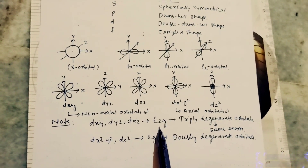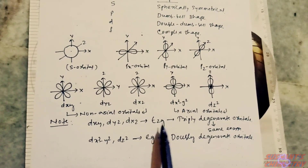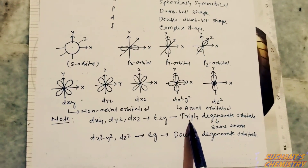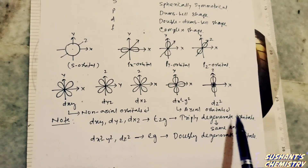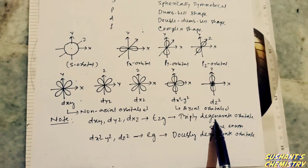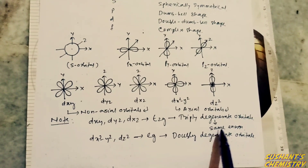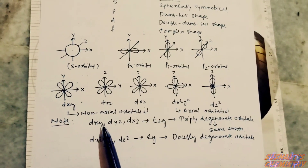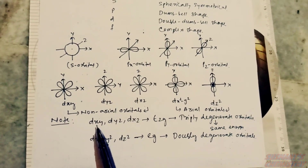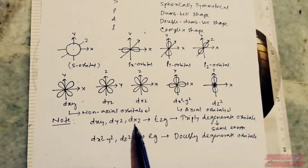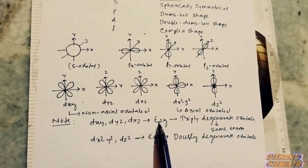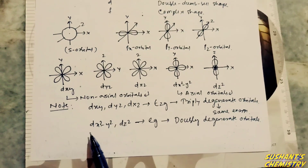The orbitals dxy, dyz, and dzx are called the t2g set. These three orbitals have the same energy, meaning they are triply degenerate.